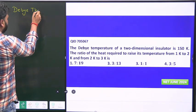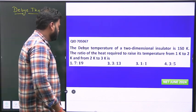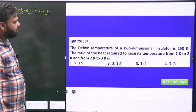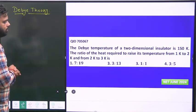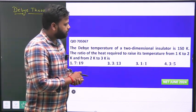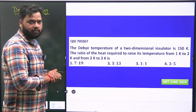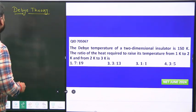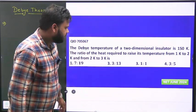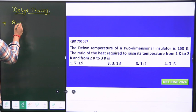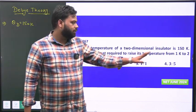This question states: The Debye temperature of a two-dimensional insulator is 150 Kelvin. What is the ratio of the heat required to raise its temperature from 1 Kelvin to 2 Kelvin and from 2 Kelvin to 3 Kelvin? There's a two-dimensional insulator with Debye temperature theta_D equals 150 K. We have to find the ratio of the heat required to raise the temperature from 1 Kelvin to 2 Kelvin and then from 2 Kelvin to 3 Kelvin.